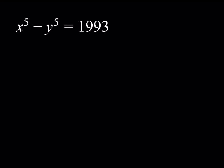Hello everyone. In this video, we're going to be solving a Diophantine equation. If you like this video, please comment, like, and subscribe, and hit the bell button for notifications. Let's get started. We have the equation x to the fifth power minus y to the fifth power equals 1993, and we're looking for integer solutions. This is a Diophantine equation in two variables, and it's a quintic equation as well.